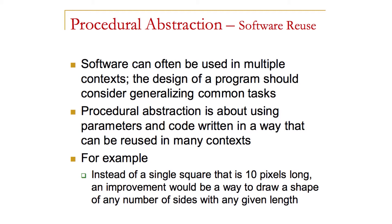For example, imagine a move block where it just always moved five pixels — that wouldn't be very reusable. By making that have a parameter, we can specify the length of the move. Similarly, instead of having a single square that's ten pixels long, which wouldn't be very reusable in many contexts, an improvement would be to draw a square dependent upon the length of the sides that the user specifies.